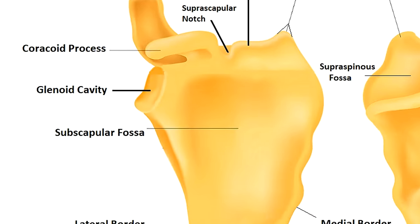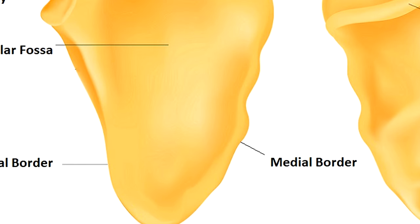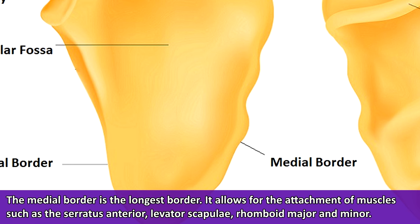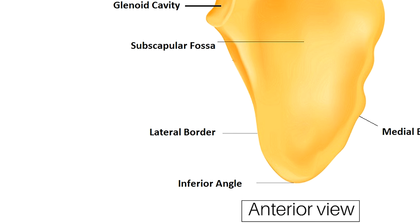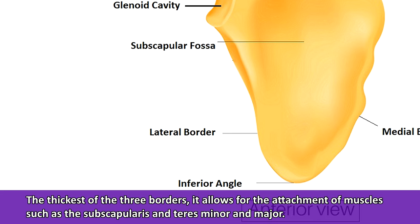Next, we have the medial border, which is the longest border of the scapula. It's located toward the midline of the body where your vertebrae are, and includes the portion of the scapula between the inferior and superior angles. It allows for the attachment of muscles such as the serratus anterior, levator scapulae, rhomboid major, and rhomboid minor. Finally, the lateral border is always on the same side of the scapula as the glenoid cavity and is the thickest of the three borders, found between the inferior angle and the lower margin of the glenoid cavity. It allows for the attachment of the subscapularis and teres major muscles.